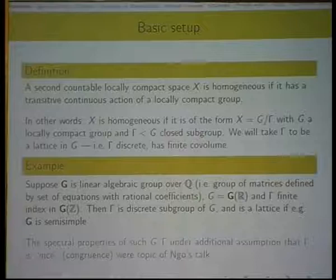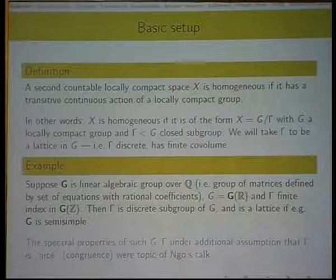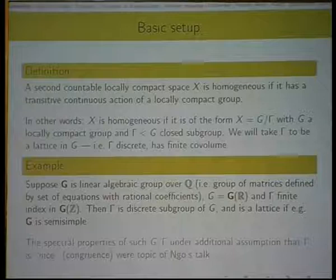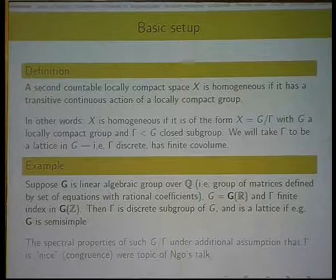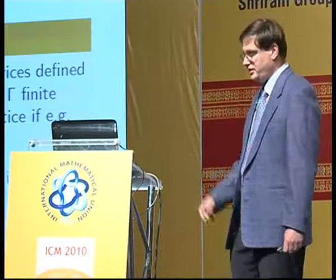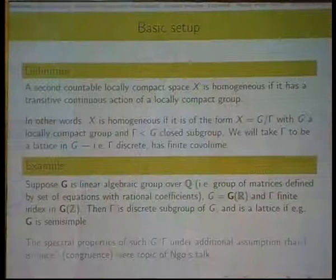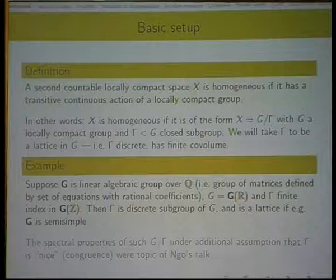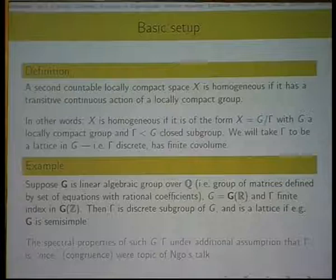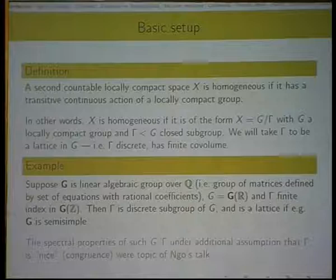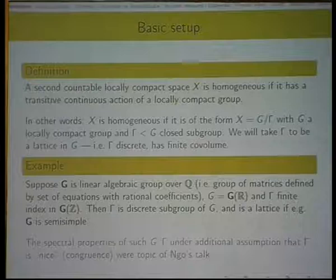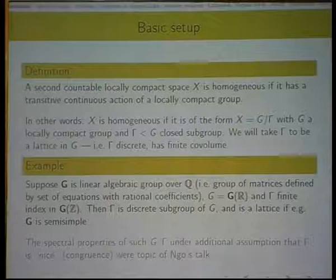Here is an important construction how to get such quotients. You start with a linear algebraic group, say, of those rational numbers. So this just means that I have a group of matrices, which is defined by a set of polynomial equations with rational coefficients. For the group G, I take the real points of my group. So all of these matrices of real numbers satisfying the finite set of equations that was, the polynomial equations that was given. And gamma, I would take the integer points of this group. These integer matrices would satisfy all of these equations. Or slightly more generally, I would take a finite index subgroup of the integer points of G. Then gamma is a discrete subgroup of G, just because the integers are discrete subgroup of the real numbers. And often, gamma is a lattice. For example, this is true if the group G is semi-simple.